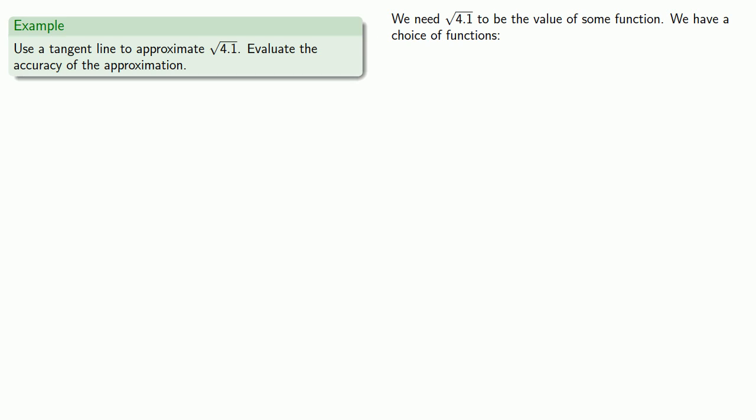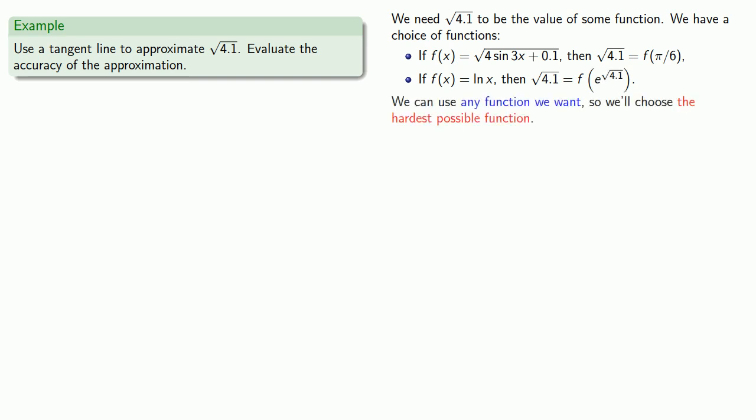For example, we may let f of x equals, how about square root of 4 sine 3x plus 0.1. Then, square root of 4.1 is going to be our function evaluated at pi over 6. Or maybe f of x would be log of x, then square root of 4.1 is our function evaluated at e to the power 4.1. We can use any function we want, so we'll choose the hardest possible function. Or we can use the simplest possible function. If f of x equals square root of x, then square root of 4.1 is our function evaluated at 4.1.